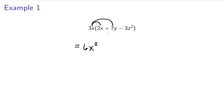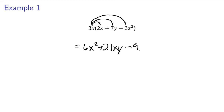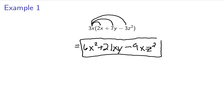For the next term, we have 3x times positive 7y, which gives us 21xy. The numbers are the only factors in common, so we can't simplify further — it's just x times y. Then 3x times negative 3z squared — don't forget that negative — gives us 3 times negative 3, which is negative 9, and x times z squared stays as x times z squared. So this is the expanded form of our multiplication.